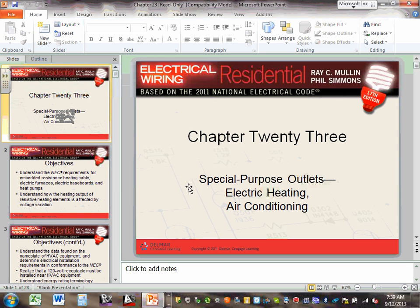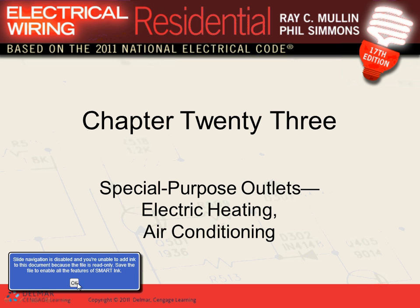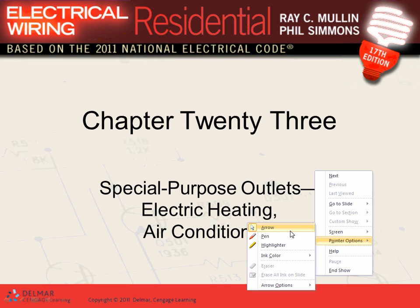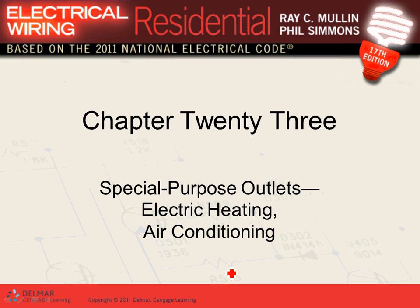Let's talk about heating and cooling — chapter 23. I'm going to go over the concept of heating and cooling and do some calculations: how to calculate the disconnect, the overcurrent protection device, and the conductors for an AC unit and an electric furnace. An electric furnace means the heating element itself is electric — you burn electricity to make heat. Yesterday we talked about exhaust fans.